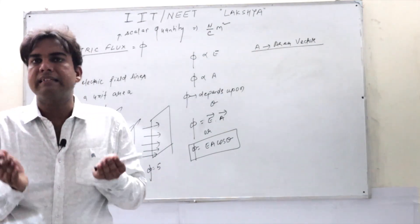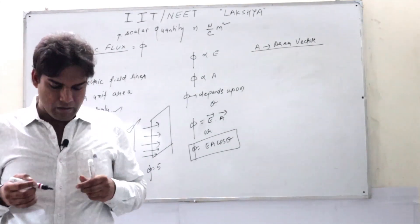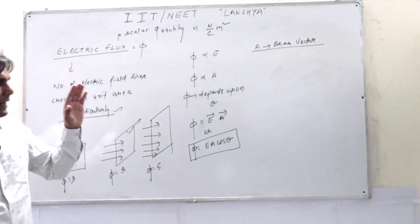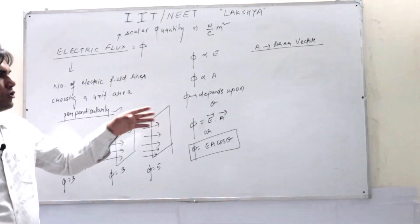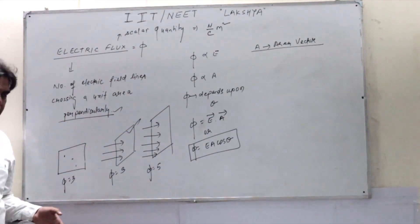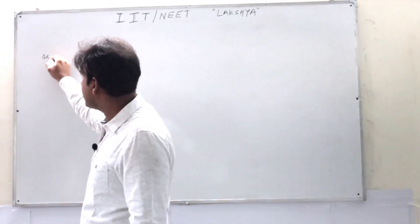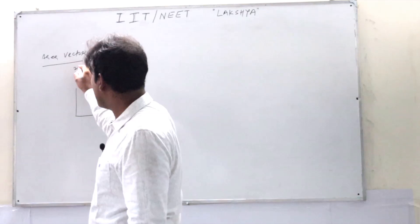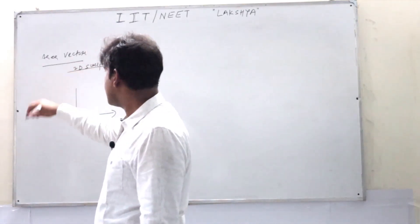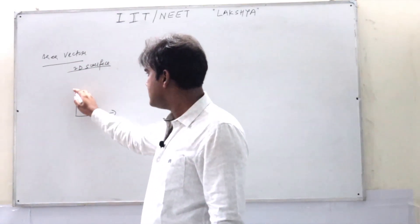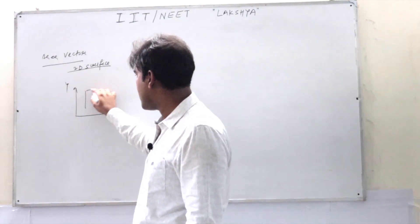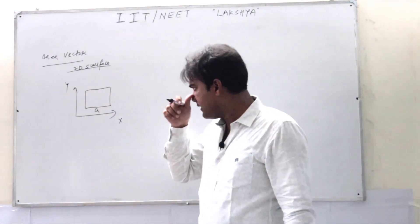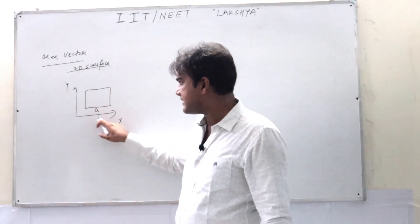But actually in physics and mathematics we need to take area as a vector quantity. Let me show you how to take the area vector. First let me talk about 2D surfaces, because we have both 2D as well as 3D surfaces. Let us say there is an x-axis and y-axis, and a square of side a is placed in the xy plane. The square is kept here in the xy plane.